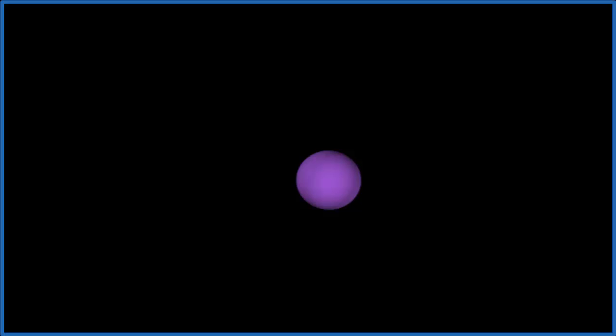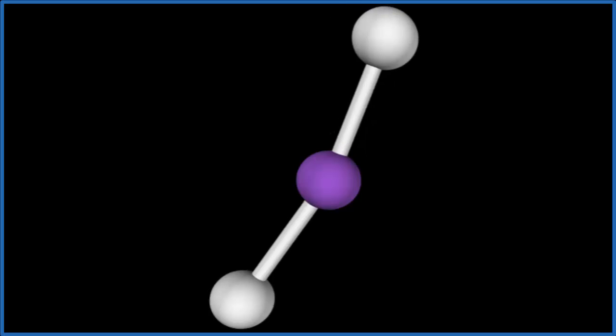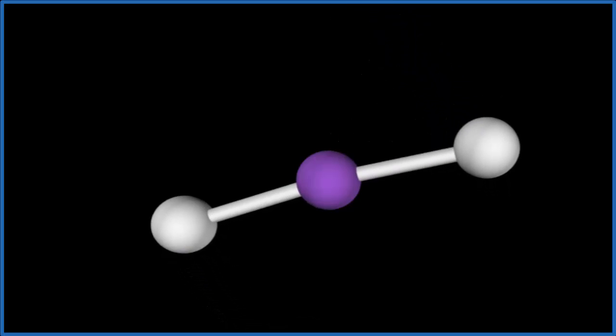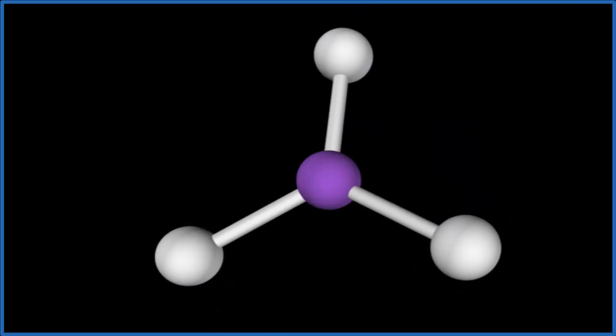So the purple, that's the central boron. Let's add three chlorine atoms. One, two, they spread out to be as far away from each other as they can. We add the third one, three.